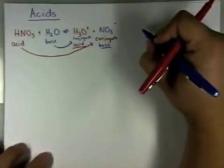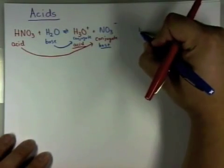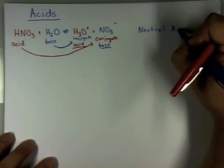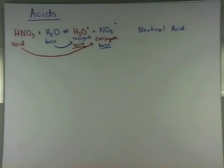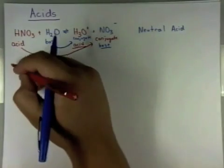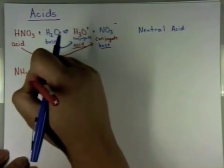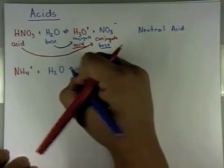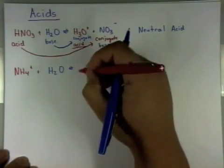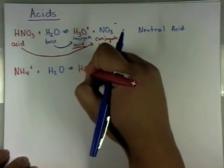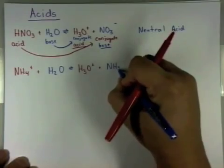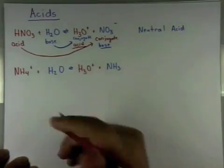And this is considered a neutral acid. Next, we'll write an acid which has a positive charge, something like NH4+. Something that has to give away a hydrogen. So NH4+ plus H2O yields H3O+ plus NH3. So notice the NH4+ has given up a hydrogen to water to form H3O+.